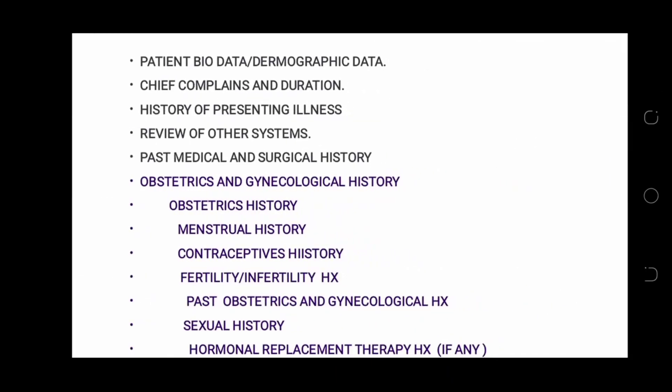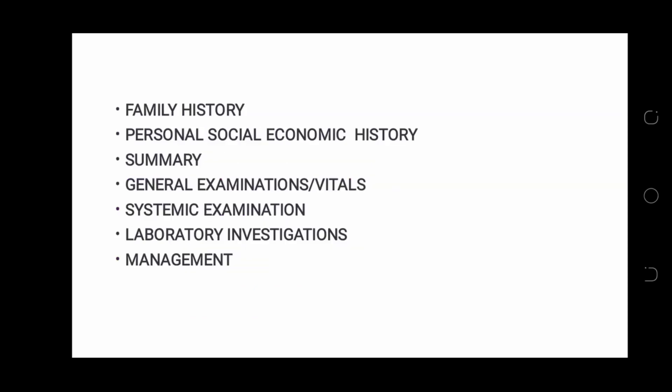To summarize, the gynecological history format includes: patient bio data and demographic data, chief complaints and duration, history of presenting illness, review of other systems, past medical and surgical history, obstetric and gynecological history — covering obstetric history, menstrual history, contraceptive history, fertility or infertility history, past obstetric and gynecological history, sexual history, and hormonal replacement therapy — followed by family history, personal socioeconomic history, a summary, and then general examination, vitals, systemic examination, laboratory investigations, and management.